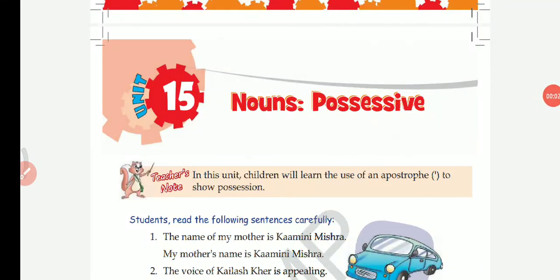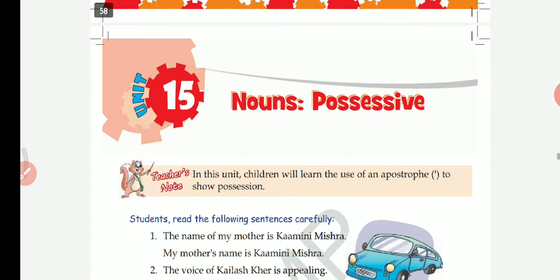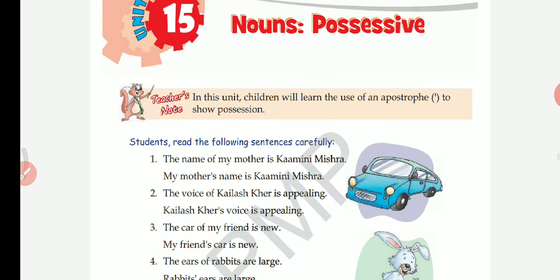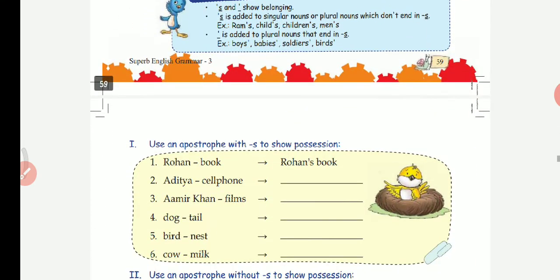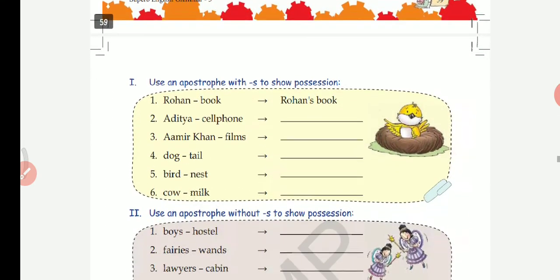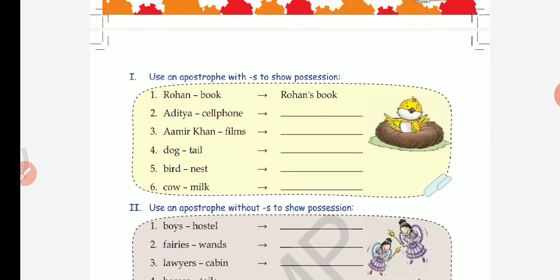Good morning children. Yesterday I was discussing Unit 15, Nouns Possessive, and today I'll be continuing with this chapter. We have already discussed question number one and question number two, and today I'll be heading towards question number three. But before that, let me revise — I told you two rules.